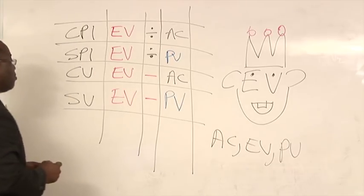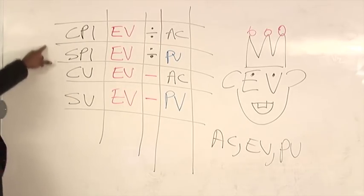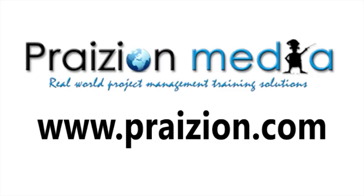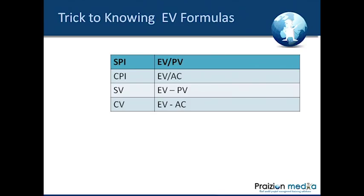And that is how you come up with your four derivative metrics. Let's take a closer look at the screen and see how all of it looks by the time we are done. We have something that looks like this: SPI, CPI, SV and CV. And that's how you get those formulas. Earned value is king.